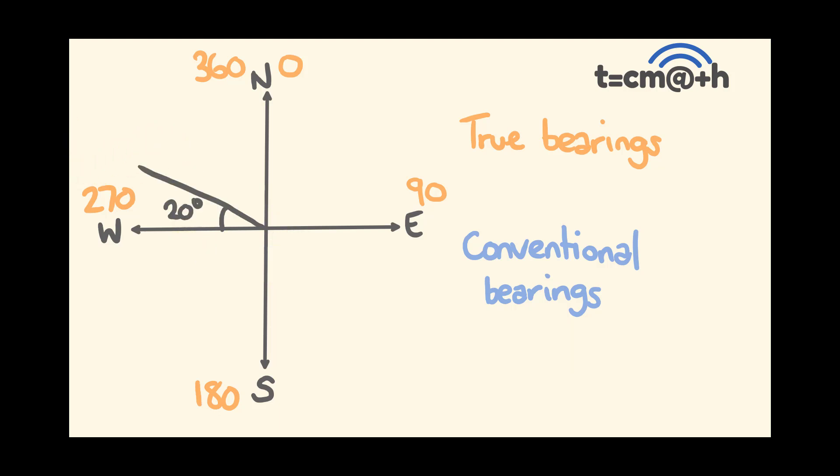All right, last example. Give this one a go. For the true bearing, what are we going to get? You could look at this straight away and say, we're going to count all the way around here. We could start here and count around all the way to this here. Zero, 90, 180, 270, and then we go an extra 20 degrees. So 270 plus 20 is 290 degrees true.